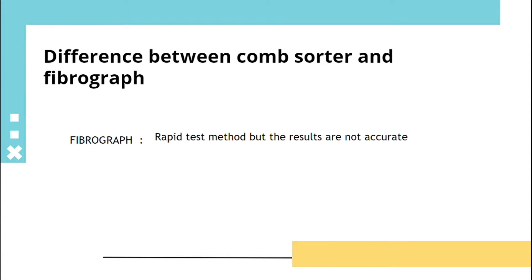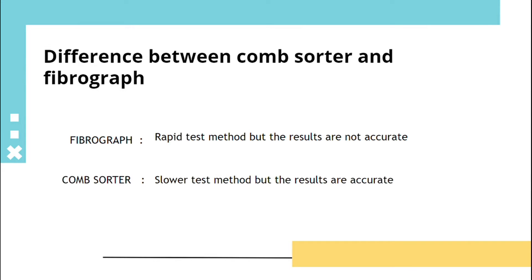Fiber graph is a rapid test method, but the results are not accurate because it is an optical method. Comb sorter is the slowest method because we have to comb and arrange the fibers, but the results are accurate.